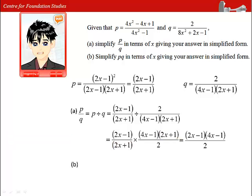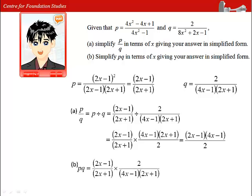Next, working on b, we shall use the simplified fraction of p multiplied by the factorized form of q. Using one of the rules of indices, multiplying the same base with different exponents gives the result.